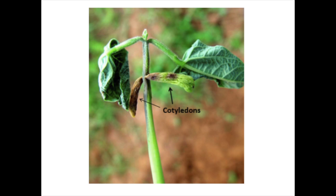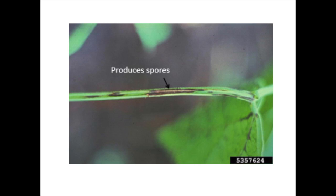When the seeds purchased for growing the crop are infected, it can lead to poor germination and seedlings infected with dark brown sunken lesions on cotyledons and stems that stunt growth or kill the plant.